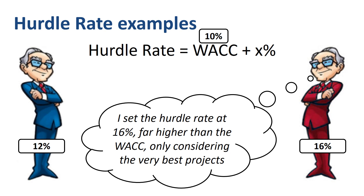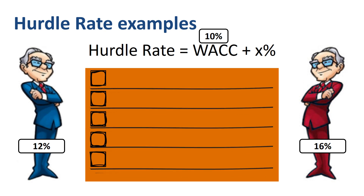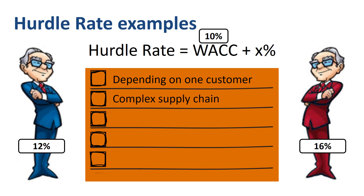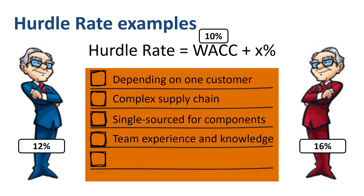Some CFOs set hurdle rate levels in a somewhat arbitrary way; others use a more structured approach. The hurdle rate describes the appropriate expected returns for the level of risk that is estimated. Riskier projects generally have higher hurdle rates than those with less risk. Items considered risky include: depending on one customer for sales, operating a complex supply chain, being single-sourced with just one supplier for key components, a gap in team experience and knowledge, or intense competition in the market.